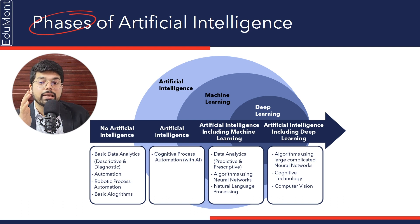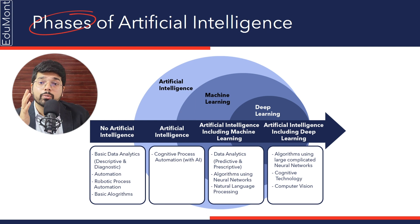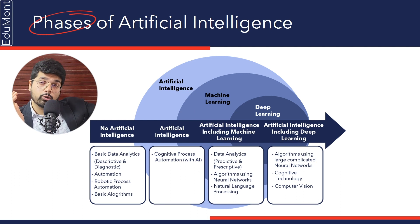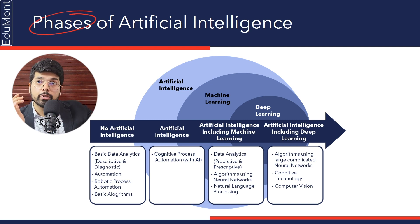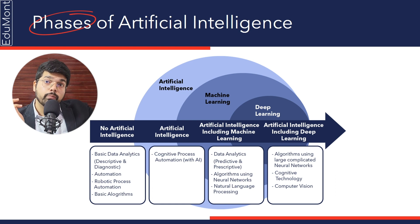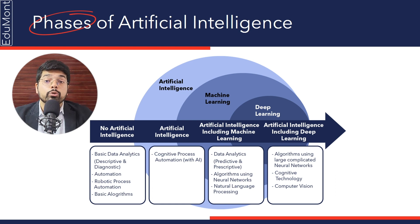At the machine learning stage, it can have natural language processing algorithms using neural networks, so it can predict what could be required, and it can also be prescriptive — it can prescribe what might be helpful to you. So it can both predict what could be required and prescribe something useful.